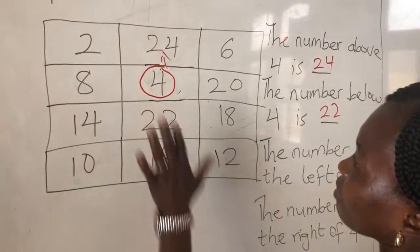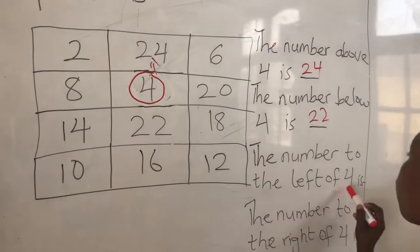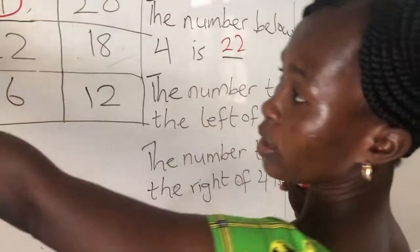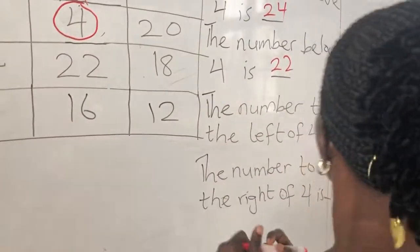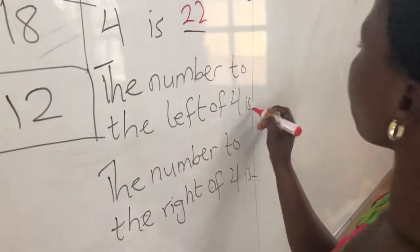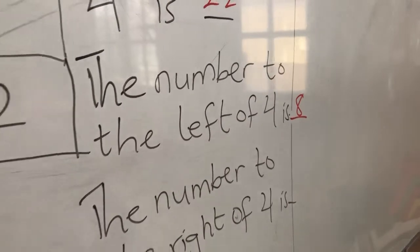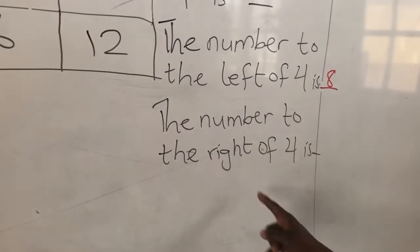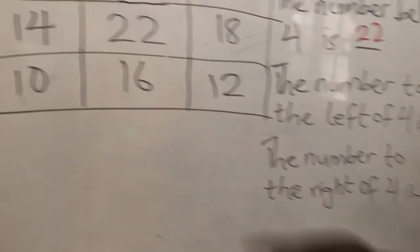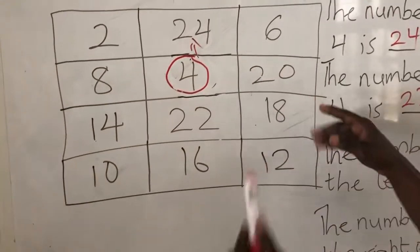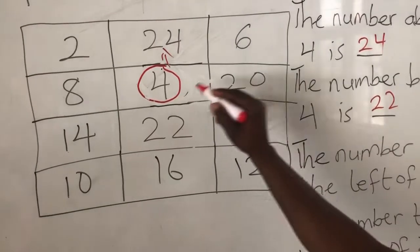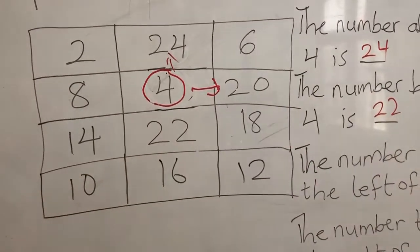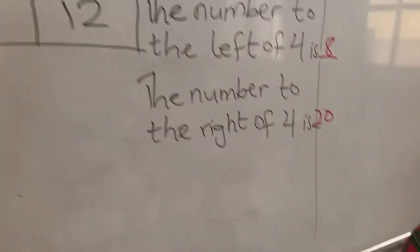So, as I'm facing here, the number to the left of 4 is what? 8. Good. And which number is to the right of 4? This is your arrow. So, it's 20. Alright.